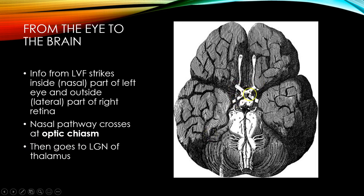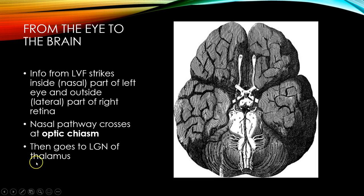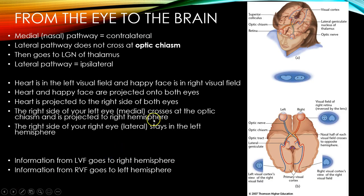You can see this is actually the crossing of the optic nerve. After that, the optic nerve goes through the LGN, or the lateral geniculate nucleus of the thalamus. The thalamus is that sensory relay station of the brain that we talked about — all of your sensory information goes through the thalamus.